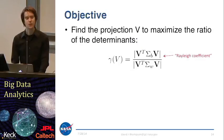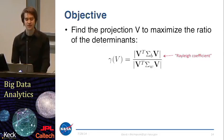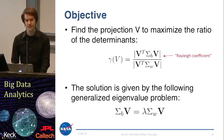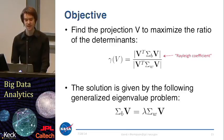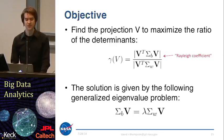Our objective is to find the projection V to maximize the ratio of the determinants — the ratio of the between-class scatter over the within-class scatter. We're trying to increase the numerator and decrease the denominator. This is known as the Rayleigh coefficient, and there are straightforward ways to calculate it. The most common is to solve a generalized eigenvalue problem where you have the within- and between-class scatter matrices on either side of the expression, and then the matrix of eigenvectors V and eigenvalues lambda. Solving this generalized eigenvalue problem with standard numerical software gives you the projection that best separates the classes.